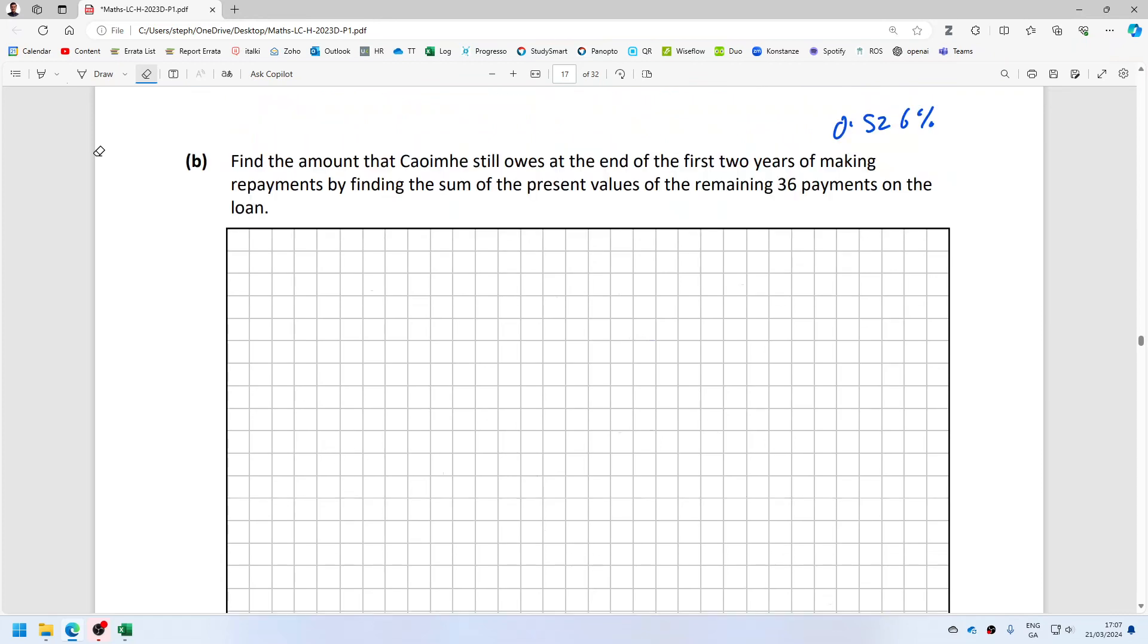So what's happening here is for this one, 0.00526 with 36 payments, you imagine that after 24 payments you travel into the future and now you're standing here. Ahead of you is still 36 more payments, and the present value of these 36 payments should equal how much you owe at this point in time.